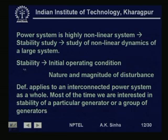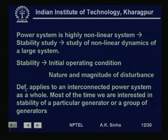Because the system is non-linear, for the same operating point, different magnitudes or natures of disturbance may lead to stable or unstable outcomes. Similarly, the same disturbance at two different operating points may be stable for one and unstable for the other. Therefore, when discussing stability, we must indicate both the initial operating point and the nature of the disturbance. This definition applies to an interconnected power system.